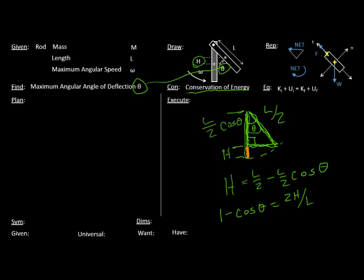And therefore, H is going to be this whole bar here, L over 2, minus L over 2 cosine theta. Which also means that 1 minus cosine theta is equal to 2H over L. And so if we look at this, cosine theta is also equal to 1 minus 2H over L. So from trigonometry, the first equation in our plan, cosine theta is equal to 1 minus 2H over L. So, good so far.